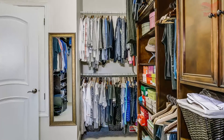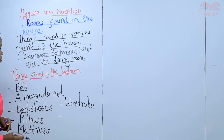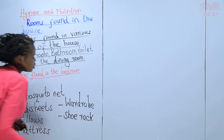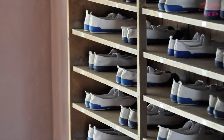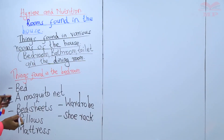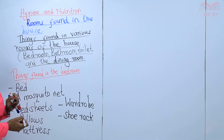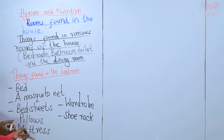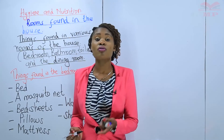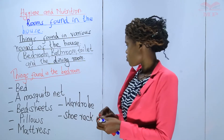We have a wardrobe — a wardrobe is a place where you hang your clothes and arrange them. We also have a shoe rack; we arrange our shoes on a shoe rack. So things found in the bedroom include: a bed, mosquito net, bedsheets, pillows, mattress, wardrobe, and shoe rack. We also have bed lamps, and some people have televisions in the bedroom.